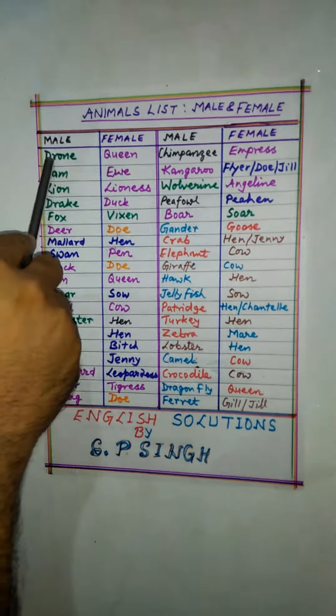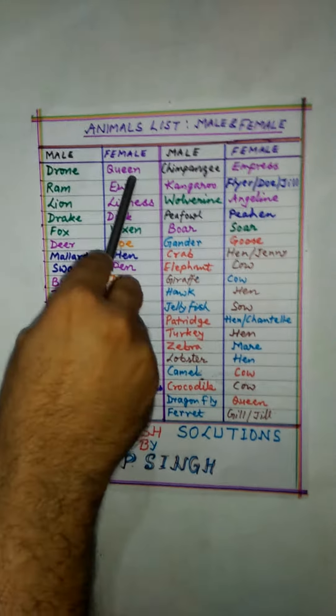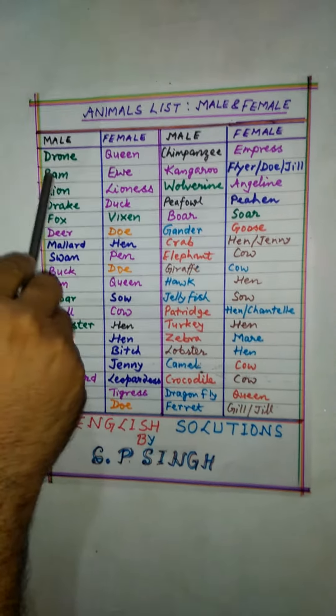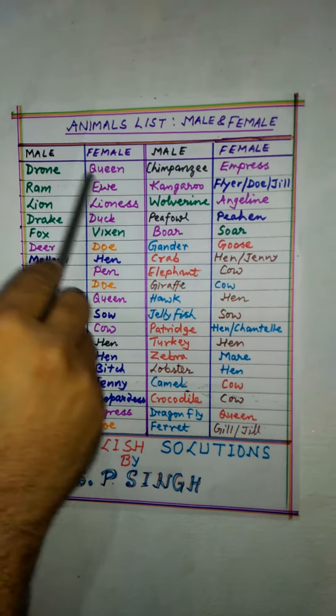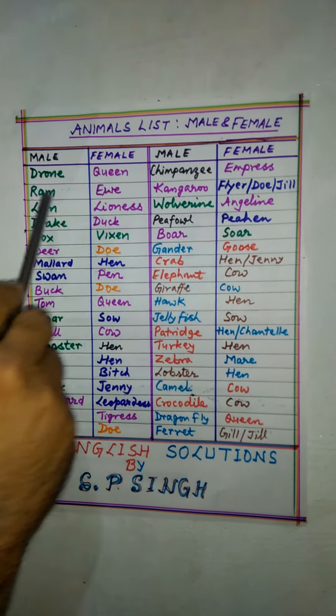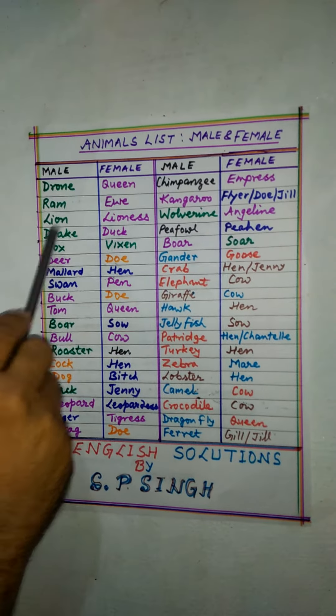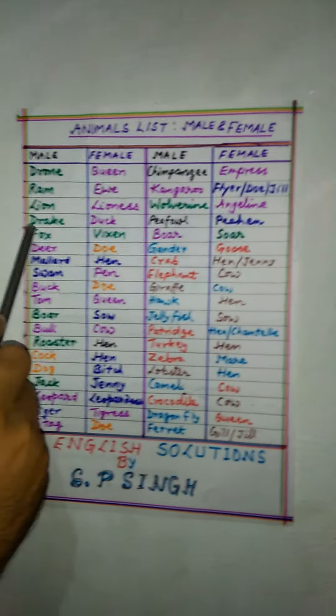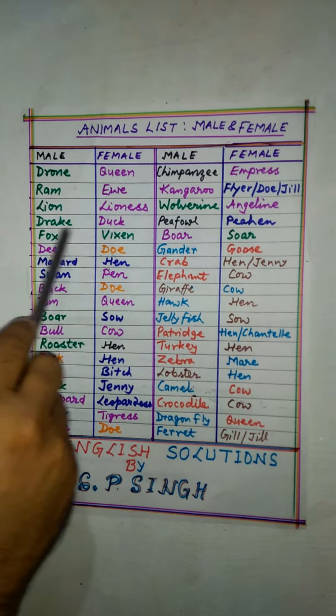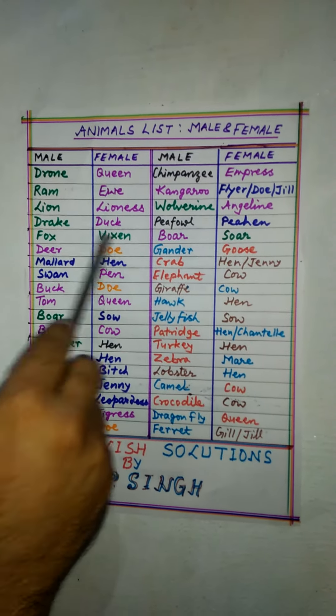First is drone — female is queen. Ram — female is ewe. Lion — lioness. Drake — duck. Fox — vixen.